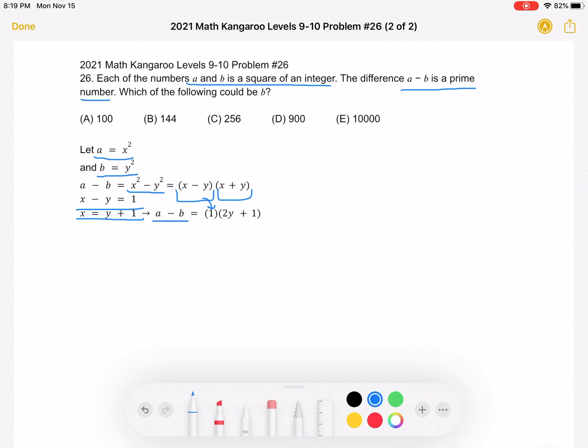which is the same as the quantity of x plus y. But now we rewrote x as being equal to y plus 1. And we know that this is a prime number.